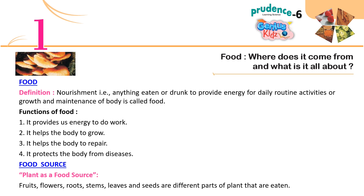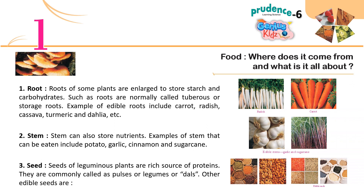Plant as a food source. Fruits, flowers, roots, stems, leaves and seeds are different parts of a plant that are eaten. One — Root: Roots of some plants are enlarged to store starch and carbohydrates. Such roots are normally called tuberous or storage roots. Examples of edible roots include carrot, radish, cassava, turmeric and dahlia, etc.